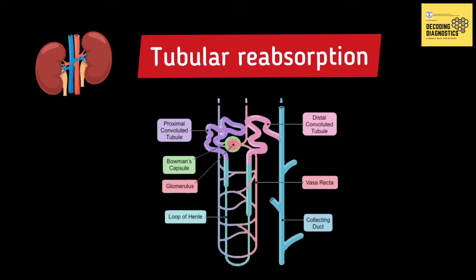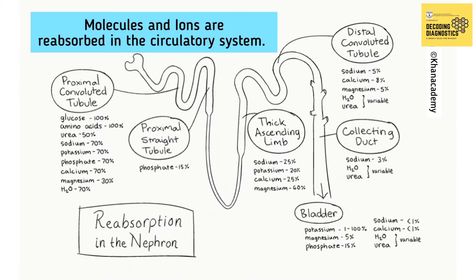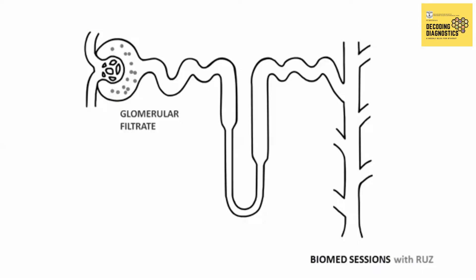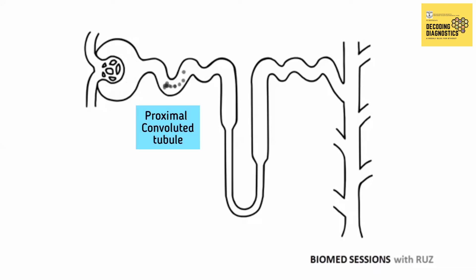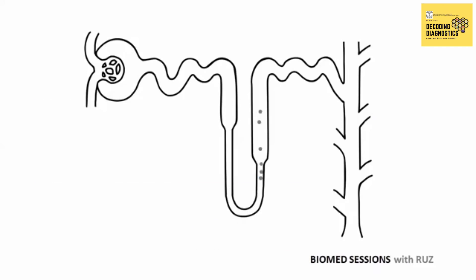Tubular reabsorption: around 99% of the filtrate obtained by the glomerulus is reabsorbed by the renal tubules. Molecules and ions are reabsorbed into the circulatory system as the fluid passes through the nephron — namely the proximal convoluted tubule, the loop of Henle, the distal convoluted tubule, and the collecting duct.